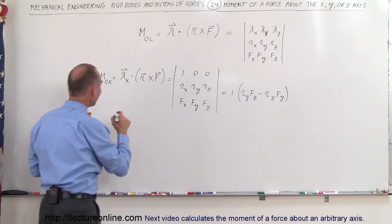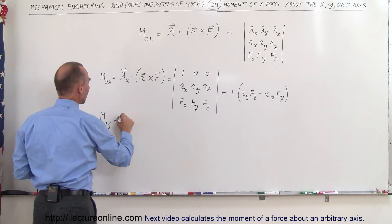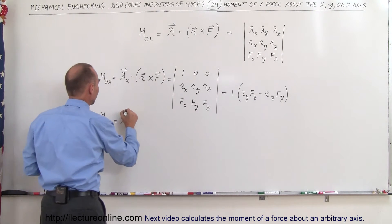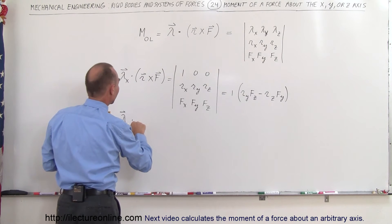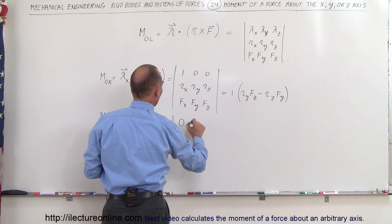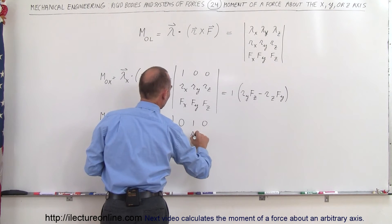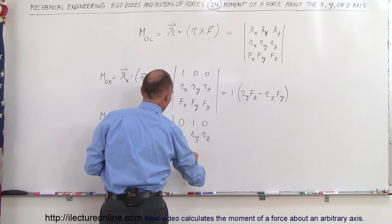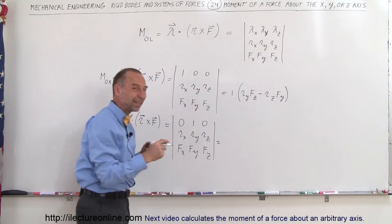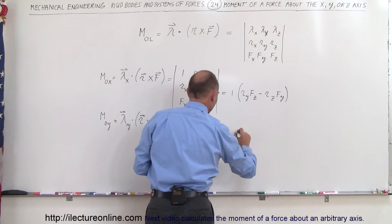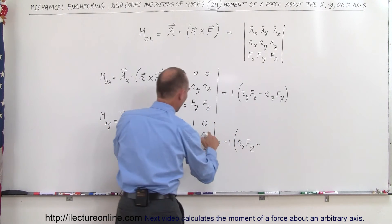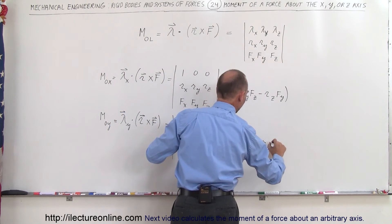If you want to find the moment about the Y axis, this is going to be only the component in the Y direction, which is 1, with the components in X and Z directions being 0 — multiplied via a scalar product times R cross F. So the matrix is: 0, 1, 0 for the unit vector row, then R sub X, R sub Y, R sub Z, and F sub X, F sub Y, F sub Z. Remember that the signs alternate, so this is going to be minus 1 times (R sub X times F sub Z minus R sub Z times F sub X).